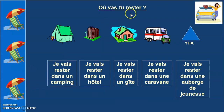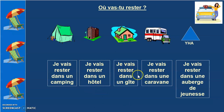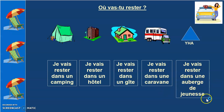The next question is Où vas-tu rester? — Where are you going to stay? Je vais rester dans un camping, dans un hôtel, dans un gîte — gîte is a kind of hostel or lodge — dans une caravane — this is a cognate, you must be able to understand it — dans une auberge de jeunesse, which means a youth hostel.